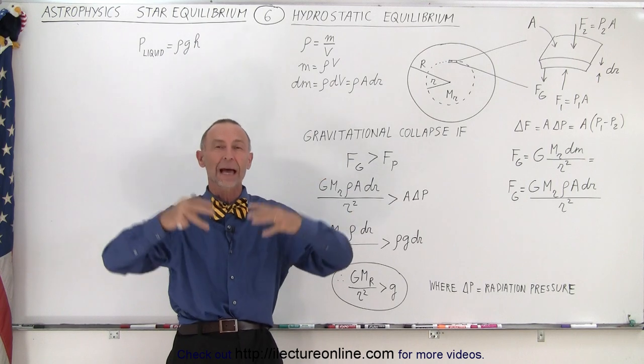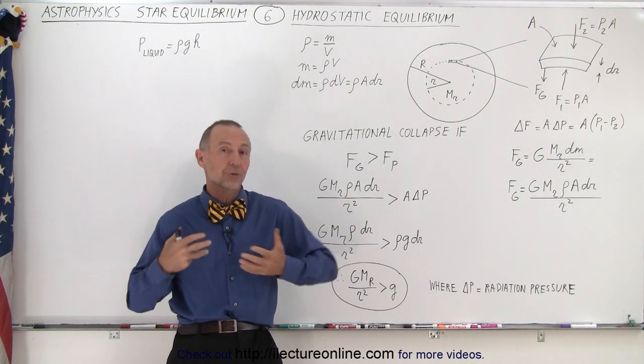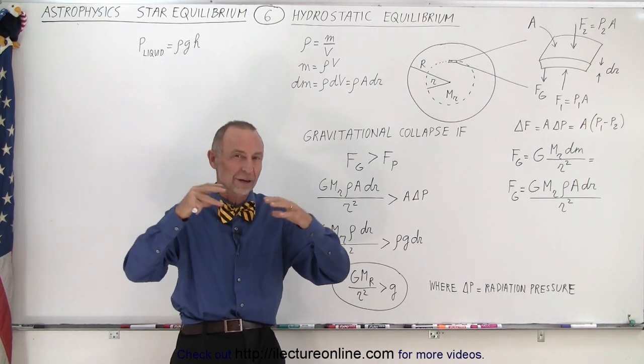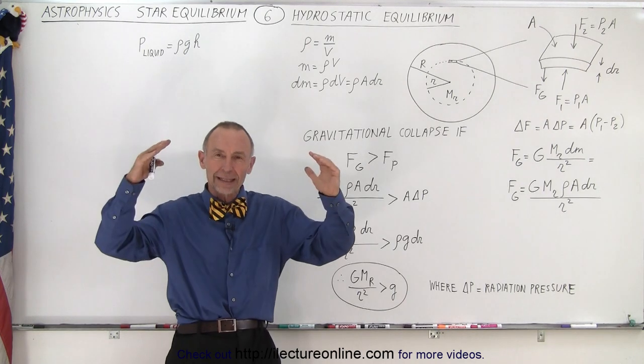What is it that keeps the star from collapsing? Because once the star begins to collapse, essentially gravity will just continue to compress the star into ever smaller volumes. But that doesn't happen. At some point, that stops.